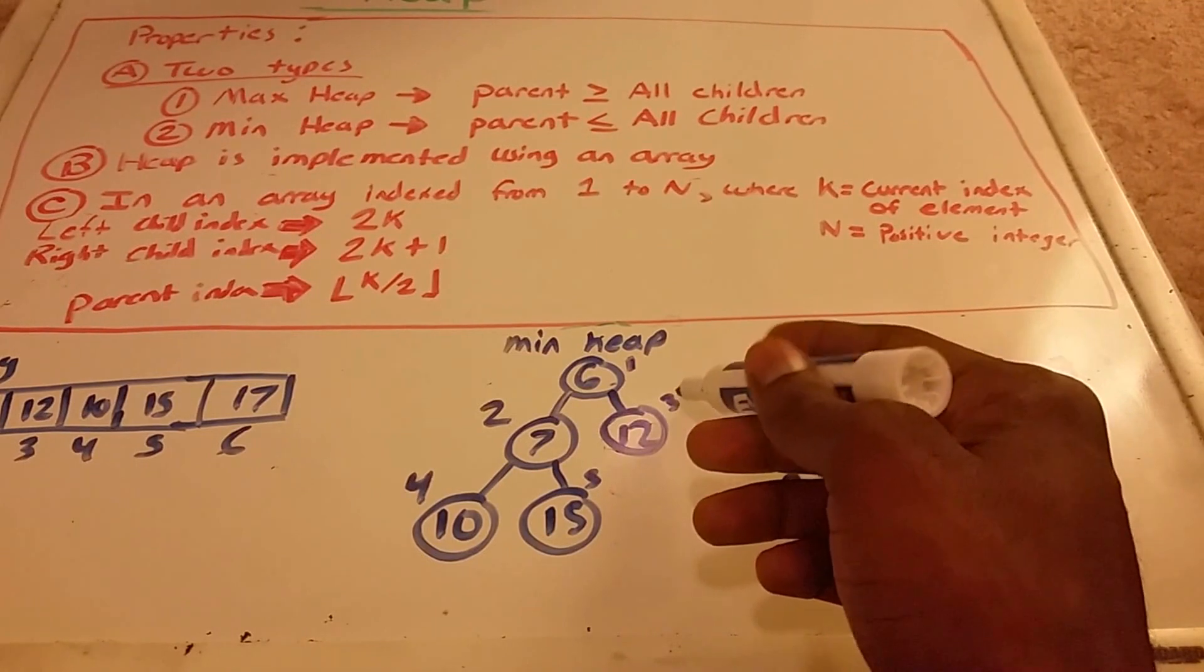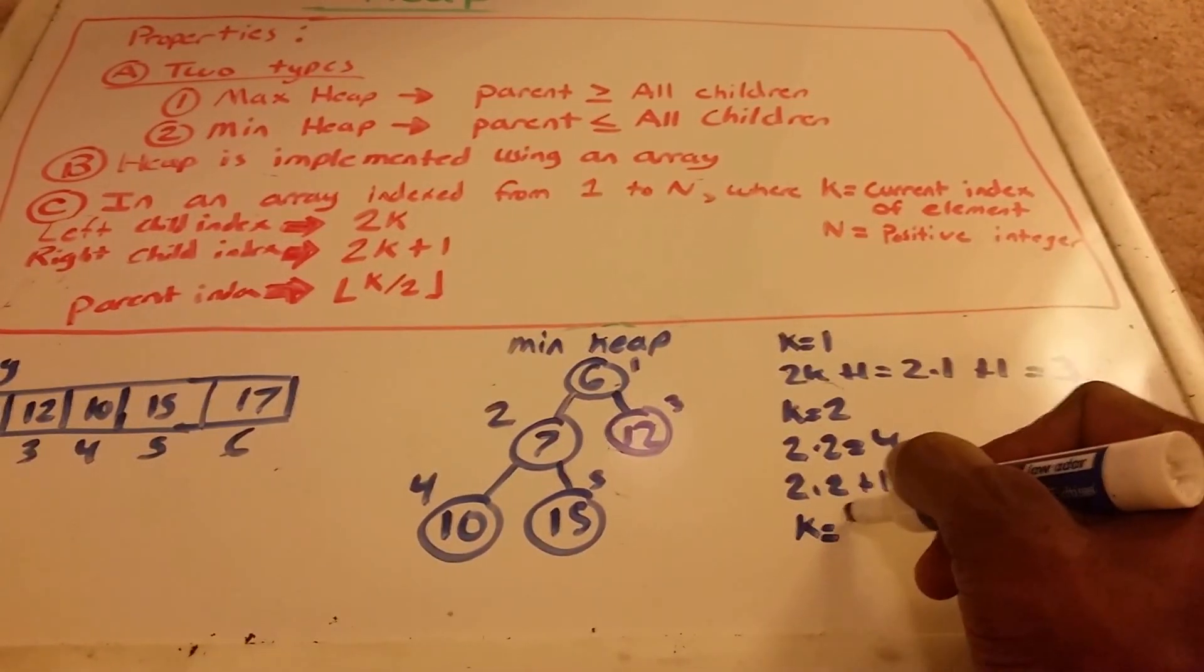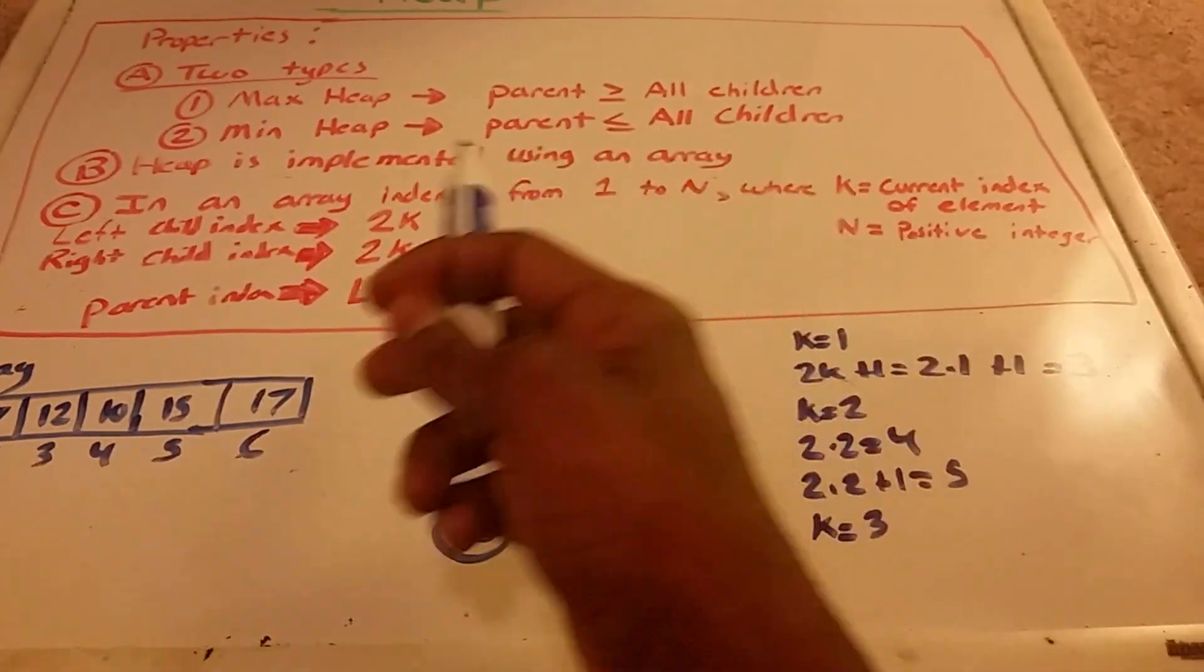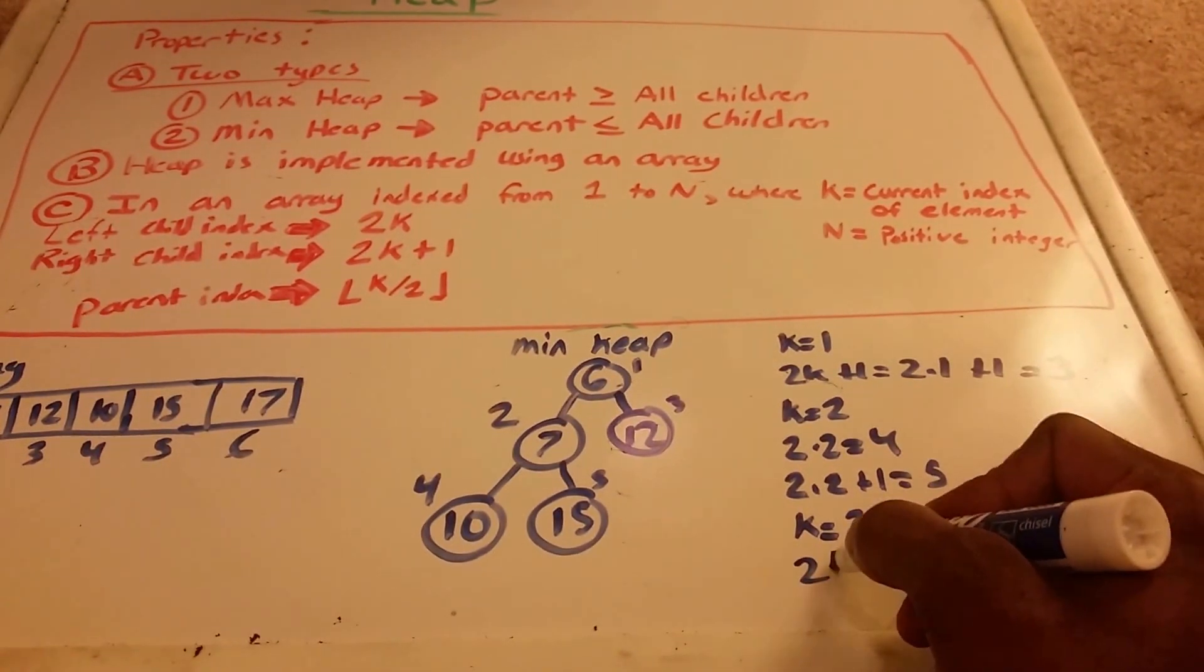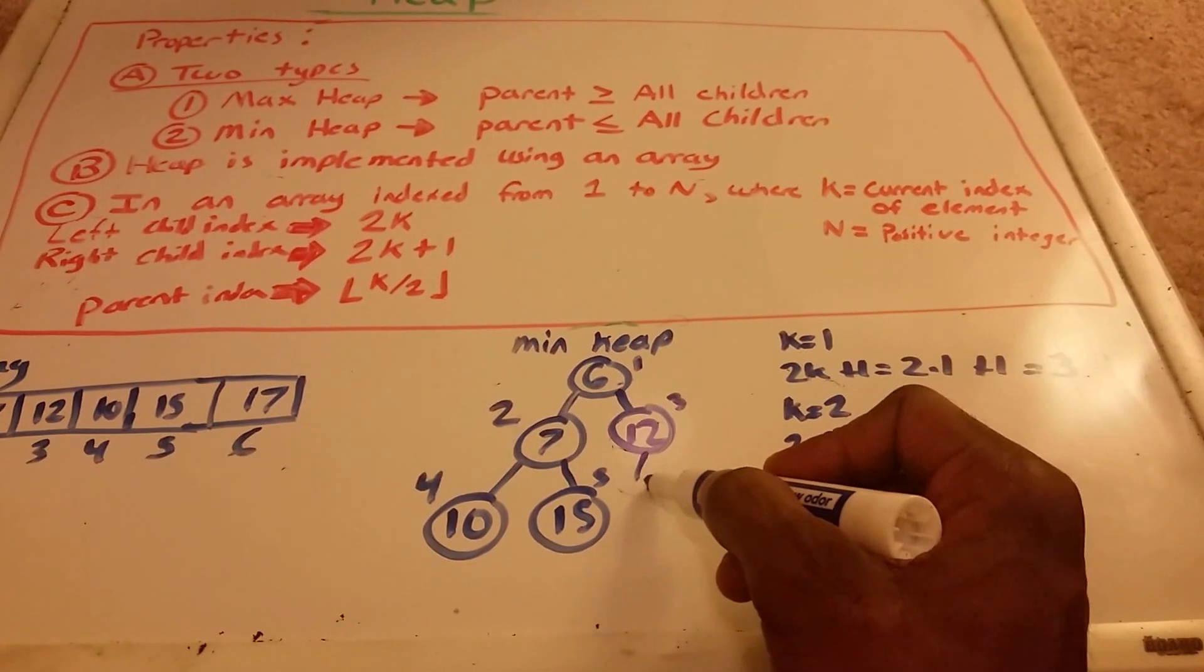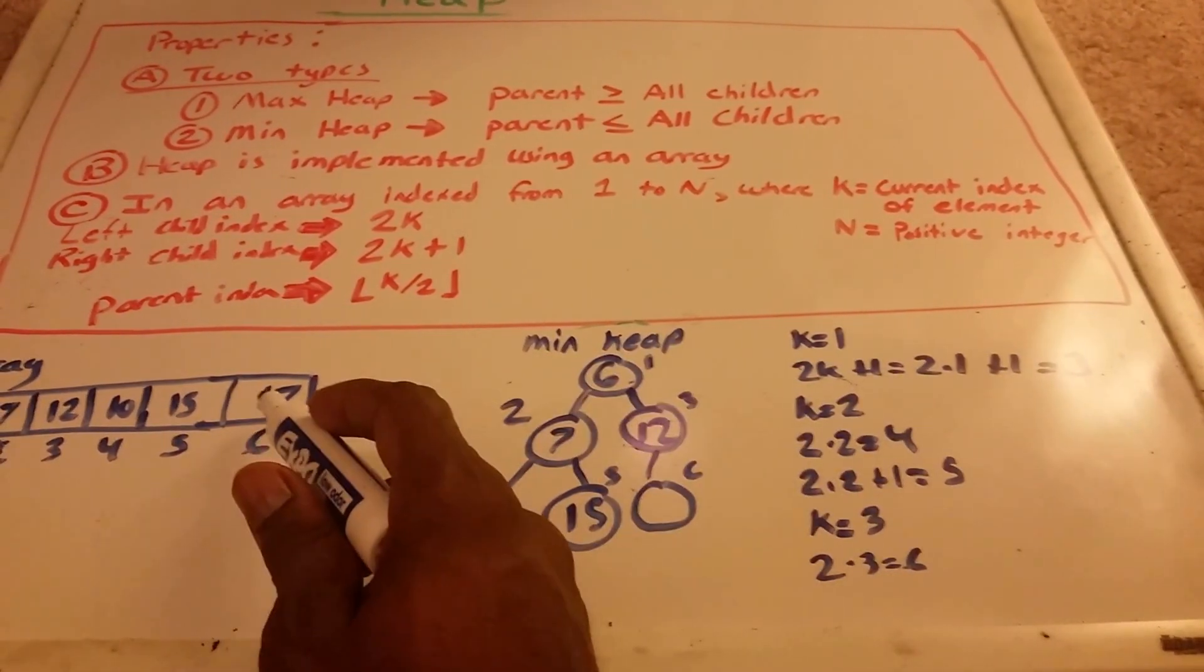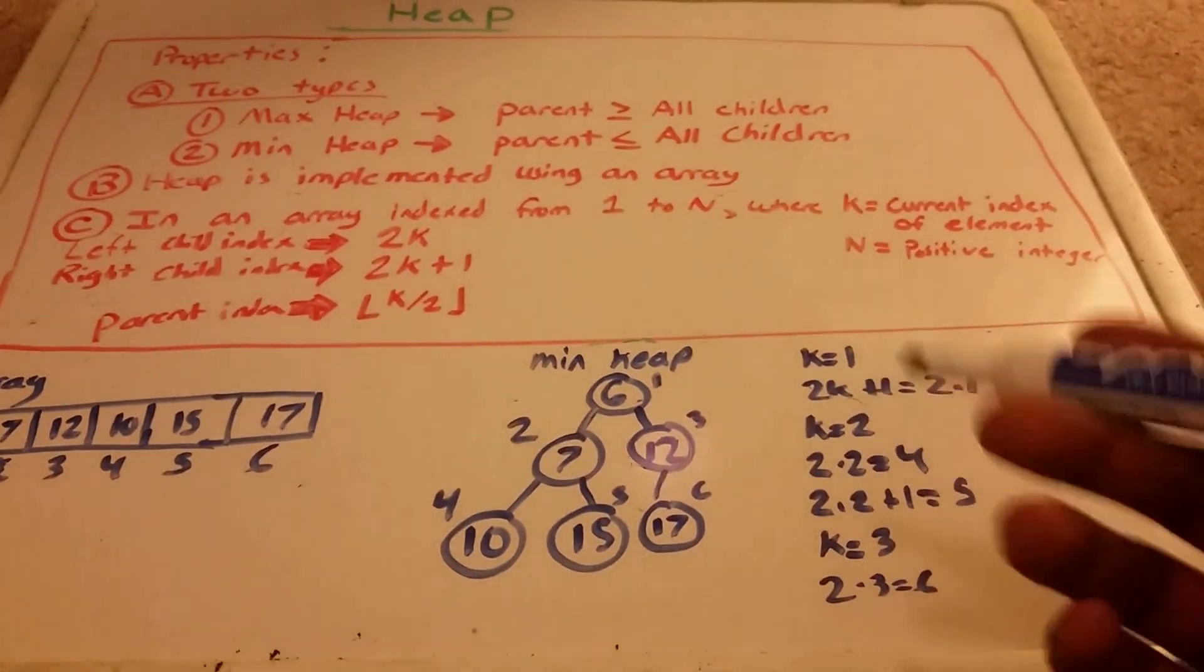Now we go to index 3, so k equals 3. We check the left child's index, which is 2 times 3, equals 6. The value at index 6 is 17. And we're done. We've created our heap.